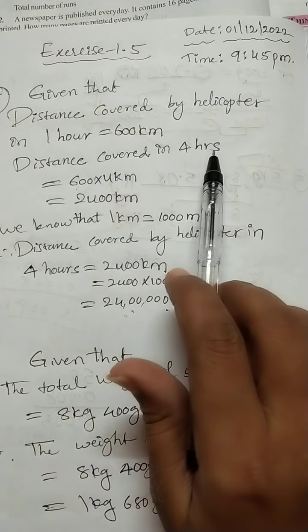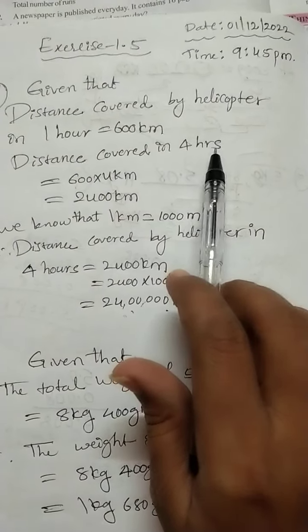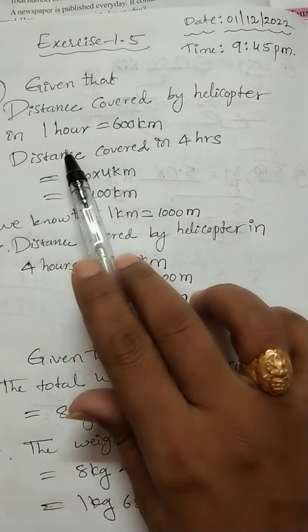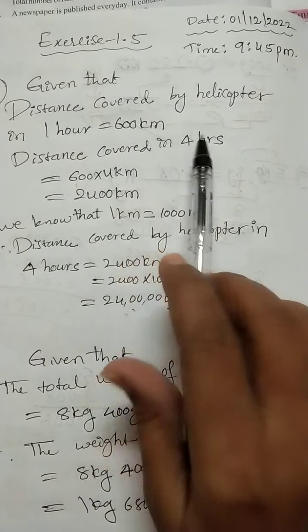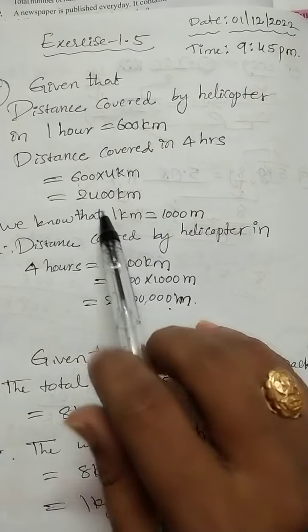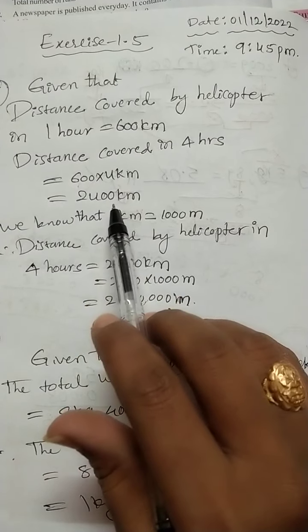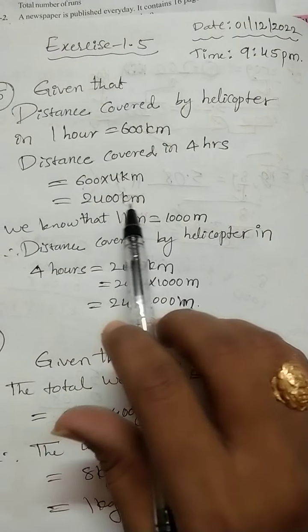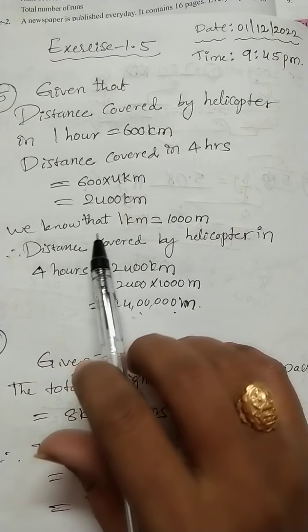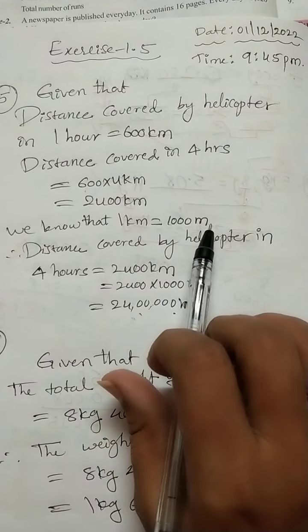Distance covered in 4 hours, we need to find out. We know the 1 hour value, so we should multiply with 4. 600 into 4: 6 times 4 is 24, write down 2 zeros, so 2400 kilometers. We know that 1 kilometer is 1000 meters.